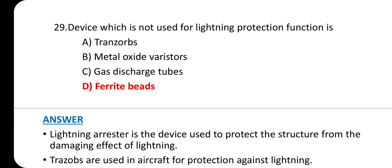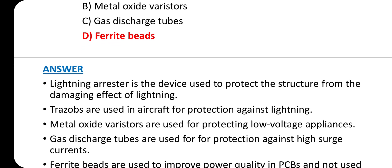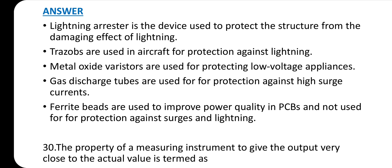Question 29: Device which is not used for lightning protection function is option D: ferrite beads. Lightning arresters protect structures from damaging effects of lightning. Diverters are used in aircraft for protection against lightning. Metal oxide varistors protect low-voltage appliances. Gas discharge tubes protect against high surge currents. Ferrite beads are used to improve power quality in PCBs and not used for protection against surges and lightning.